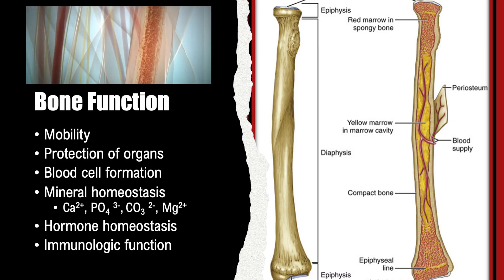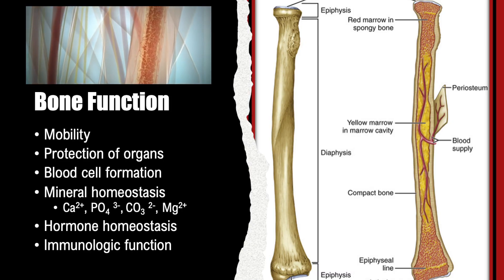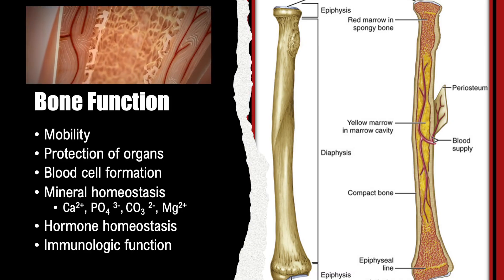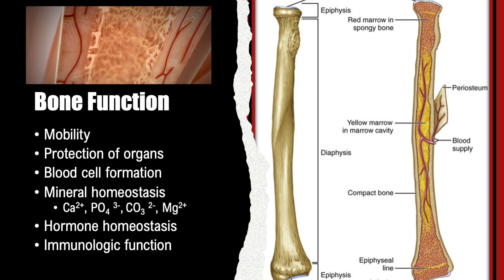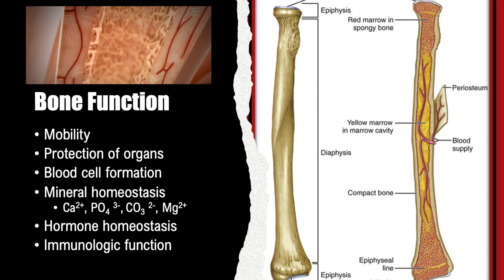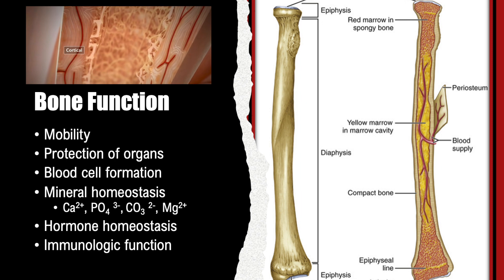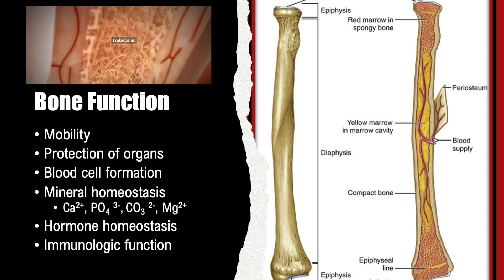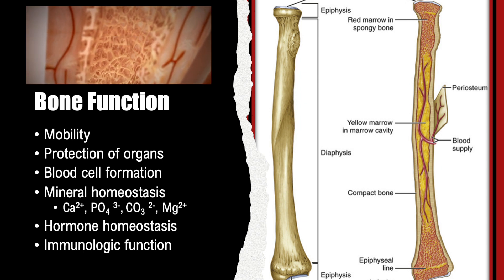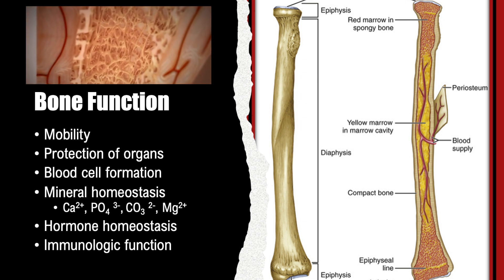Bones give form to the body, support our tissues, and permit movement by providing points of attachment for the muscles. Many bones meet at movable joints that determine the type and extent of movement possible. Bones also protect many of the body's vital organs.